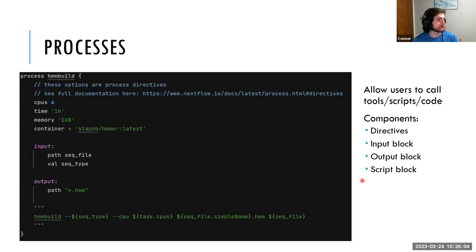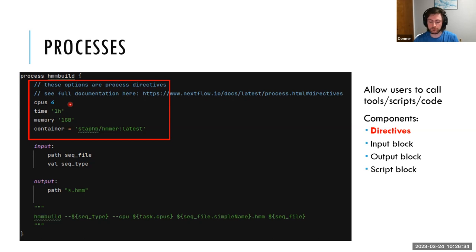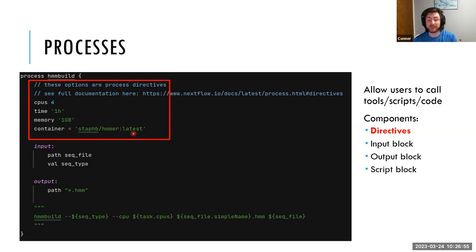Now let's talk about processes. A more complicated process has four big parts. The first are directives at the top of the process — these tell Nextflow information it needs to know about running this script. Here we say: give this process four threads (a relatively computationally intense process), it should complete inside an hour otherwise cancel it, and use no more than one gigabyte of RAM. We also say use this HMMER container. Because we set that in the profile, you actually don't need to set it here — it's now the default for every process — but I set it again to be explicit.